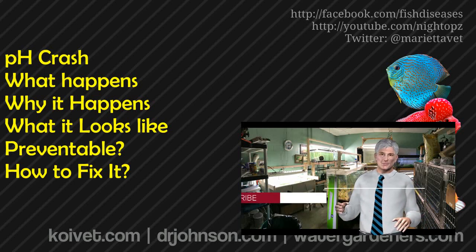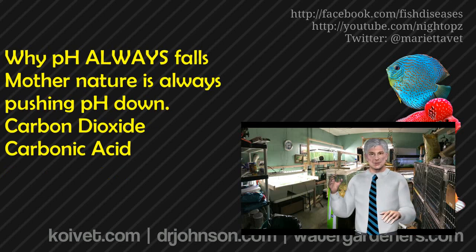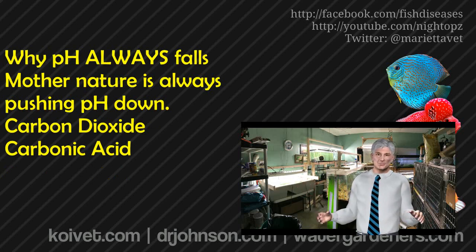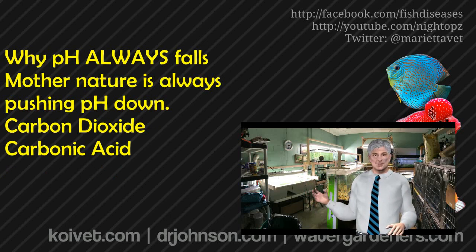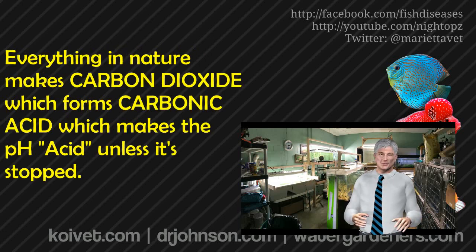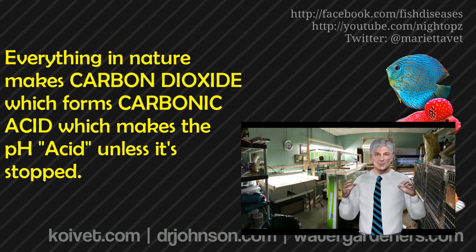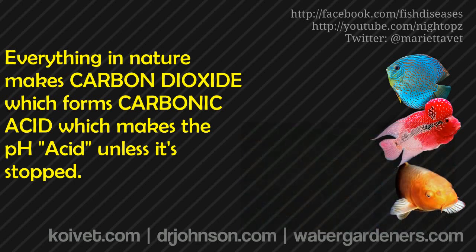There are two things to keep in mind. One: anything that produces carbon dioxide — which includes breathing for fish, decay processes by bacteria, decay of organic material like plants, fish, uneaten food, and fish waste — all produce carbon dioxide. Live plants, when in sunlight, produce oxygen and consume carbon dioxide. But at night they do the reverse and produce carbon dioxide. All living biological processes produce carbon dioxide.